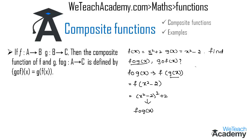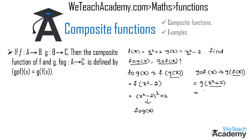Now for g circle f of x, it is defined by g of f of x, where f of x is x square plus 2. We find the value of g of x square plus 2 by replacing x with x square plus 2 in g of x, giving us x square plus 2 minus 2. So g circle f of x simplifies to x square.